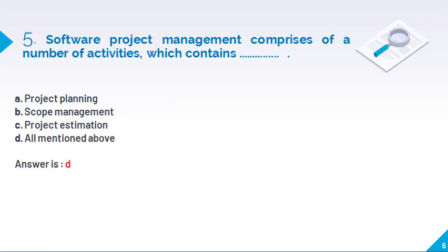This is the fifth question. Software product management comprises of a number of activities which contains project planning, scope management and project estimation. So answer is D because the software project management we are using all those things, all three things: project planning, scope management and project estimation.